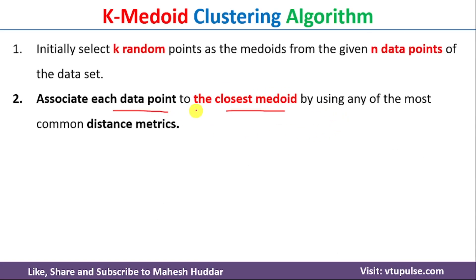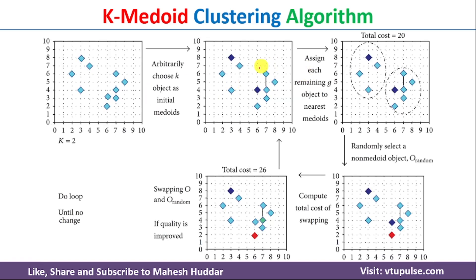The distance between a data point and a Medoid can be calculated using different distance metrics like Euclidean distance, Manhattan distance, or cosine similarity. Based on the distance, we assign each data point to its closest Medoid. After calculating distances and forming clusters, we get two clusters — the first cluster has four data points and the second cluster has six data points.